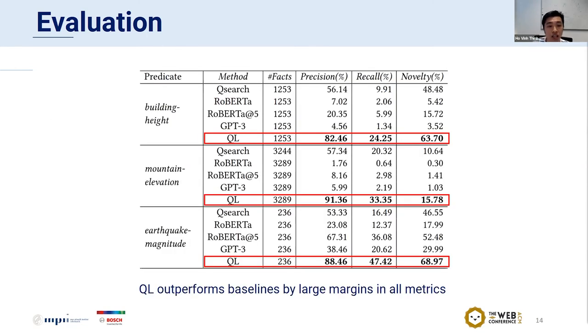These are the main results we got. You can see that QR is our method. From this table, we can see that our QR method outperforms all three baselines in all metrics. The total number of extracted facts by QR varies from hundreds to thousands, with precision reaching about 90 percent for the predicates building height, mountain elevation, and earthquake magnitude. The recall is fine but still quite low compared to what's already available in Wikidata. Finally, the novelty numbers show the potential for adding new knowledge to the KB, and this measure is especially good for predicates building height and earthquake magnitude, which is from 60 to 70 percent.